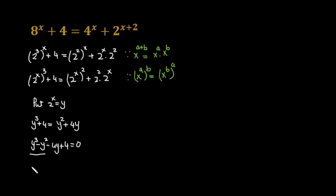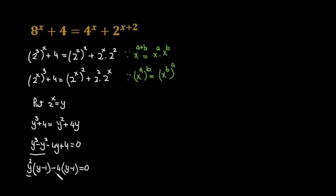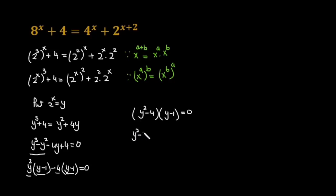This gives us y raised to the power 3 minus y raised to the power 2 minus 4y plus 4 equals 0. In the next step I am taking y common from the first two terms, giving y squared times y minus 1, and taking minus 4 common from the last two terms, giving minus 4 times y minus 1. Then combining these, we get y squared minus 4 times y minus 1 equals 0.